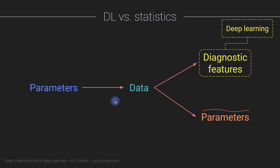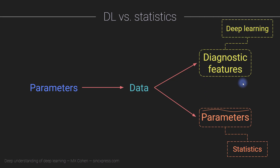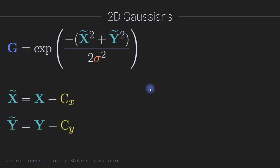Alternatively, we can use data to estimate the underlying generative parameters, which is often the goal in basic science or fundamental research — using data to understand how nature works rather than make a category assignment. This is generally the goal of statistics. That said, it's a bit of an artificial distinction: you can use statistics for categorization and you can use deep learning to estimate generative parameters, which is exactly what we're going to do in this video.